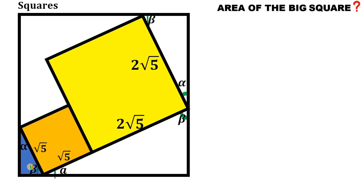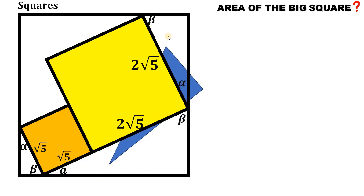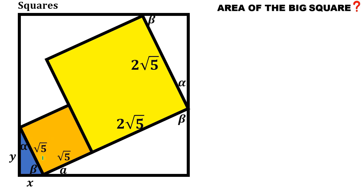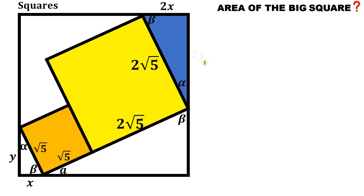Therefore, we can say that this small right triangle is similar to this big right triangle, and this is similar to this right triangle. Now, let x be the length of the shorter leg of this right triangle and the longer leg be equal to y. Since these two right triangles are similar, take a look at their hypotenuses. The hypotenuse of this small right triangle is square root of 5, and the hypotenuse of this right triangle is 2 times the hypotenuse of the small right triangle. Meaning, the scale factor is just 2. So the length of the shorter leg of this right triangle is just 2x and the length of the larger leg is just 2y.